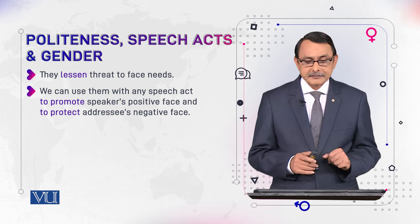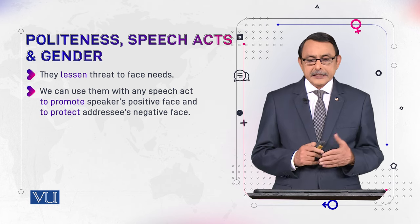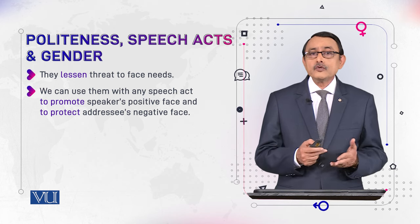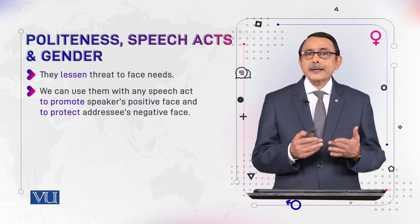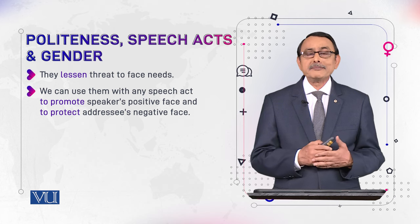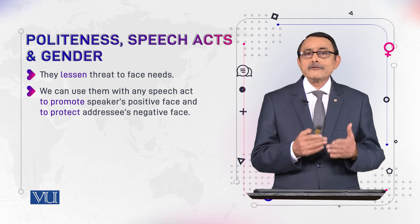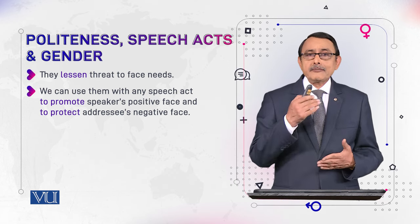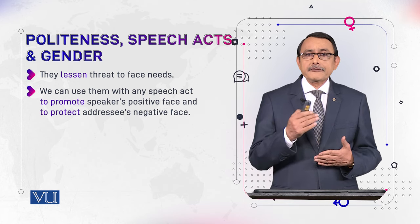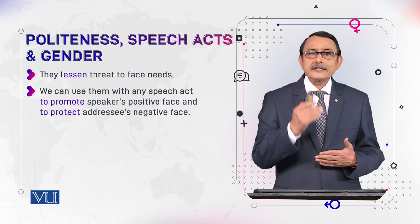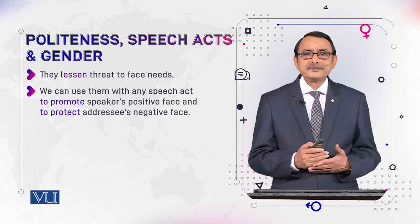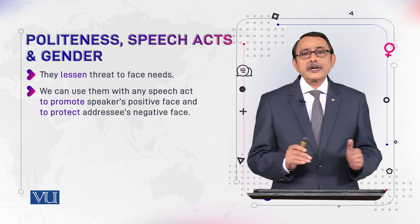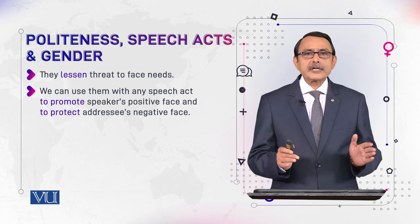When you use politeness formulas with face-threatening acts, the threat is eliminated. We can use them to promote our positive face, because you are accepted even by the person who wants distance from you. In this way you save your positive face, and the other person's negative face needs — wanting to keep distance — are also satisfied. With the help of these formulas we save face needs, and that's why there is no need to classify speech acts with reference to politeness.